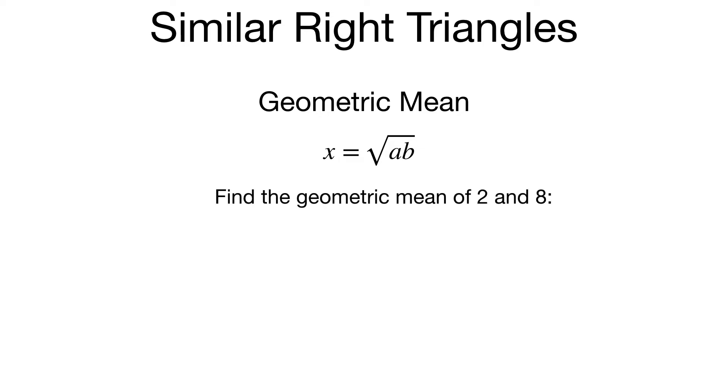If I want to find the geometric mean of 2 and 8, you multiply 2 and 8 and put them under the radical. 2 times 8 is 16, so x will be the square root of 16, which is 4. The geometric mean of 2 and 8 is 4.